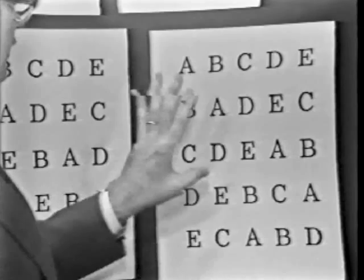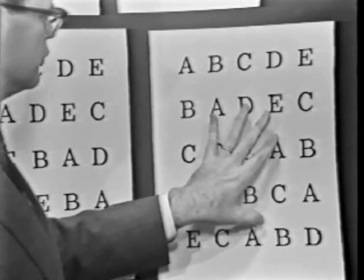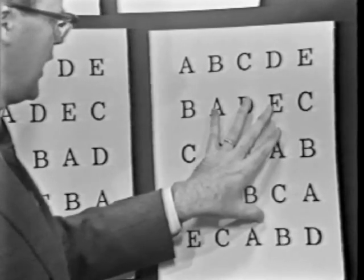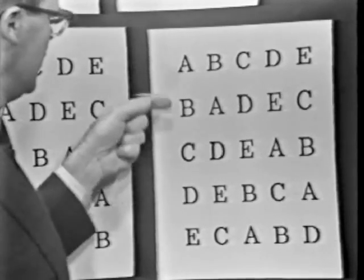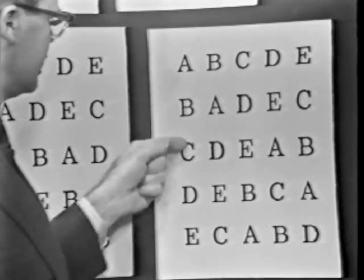These are sort of parent Latin square designs, and you should choose the parent design randomly, and then you should randomly assign the two blocking variables randomly. For example, this would be Monday, Tuesday, Wednesday, Thursday, Friday, and this would be individuals 1, 2, 3, 4, and 5.